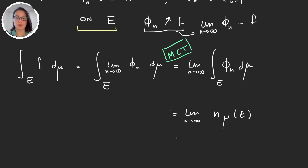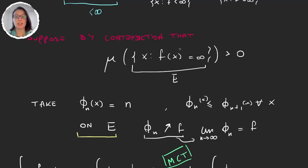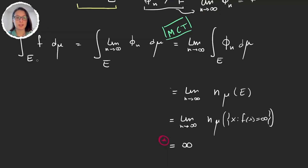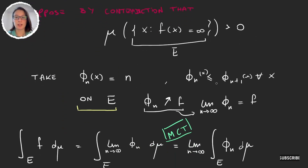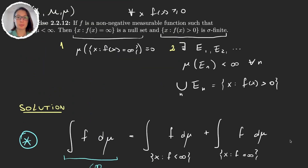Now, E is the set of all points where f(x) is infinite, and we assumed this set has positive measure. So we are taking the limit as n → ∞ of n times something positive — something that's not zero. Because of this assumption, this limit has to be infinite. So we have that the integral over all points where f is infinite is infinite, and by our earlier equation, the integral of f also has to be infinite. This is a contradiction, which finishes the first part of the problem.